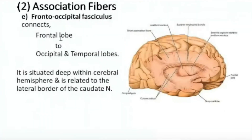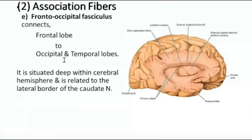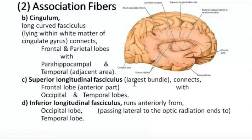The frontal occipital fasciculus, as the name indicates, connects the frontal lobe with the occipital and temporal lobes. It is situated deep within the cerebral hemisphere and is related to the lateral border of the caudate nucleus. It lies underneath the superior longitudinal fasciculus, which is the longest fasciculus.